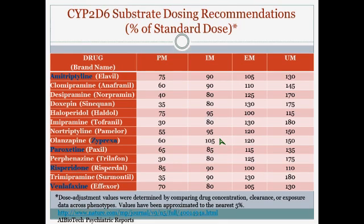For the CYP2D6 dosing recommendations, this chart comes from a study with a link posted at the bottom of the slide. It provides guidelines for physicians on what percent of the standard dose they should prescribe for certain medications depending upon the metabolizer type. For poor metabolizers, the doses are lower than for intermediate metabolizers, and lower still than for extensive and ultrarapid metabolizers. This is a good starting point for physicians prescribing these medications, and it is just part of the list available at that link.